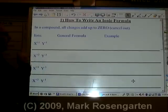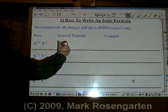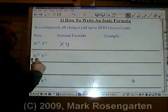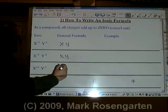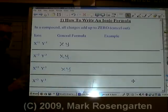When two ions combine, their charges are going to cancel out. Plus one and minus one cancel out. Plus two and minus two cancel out. Plus three and minus three cancel out.